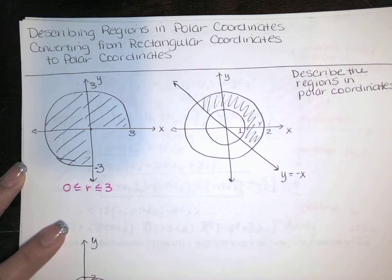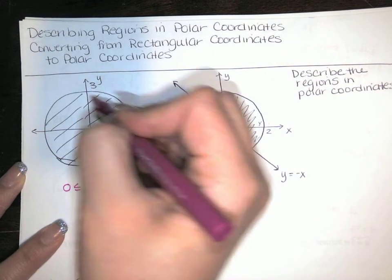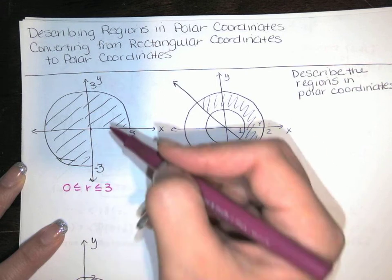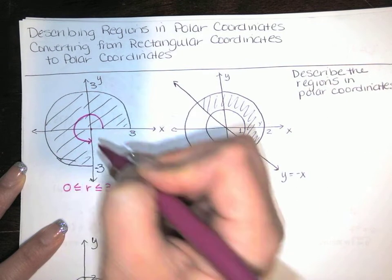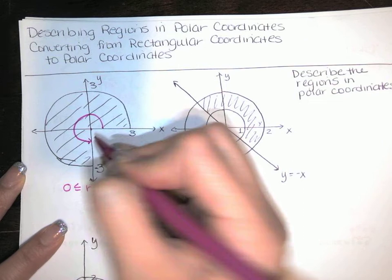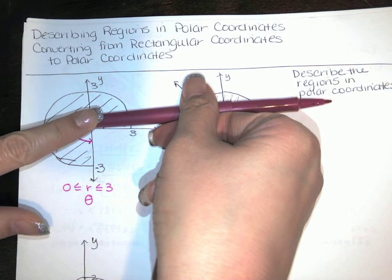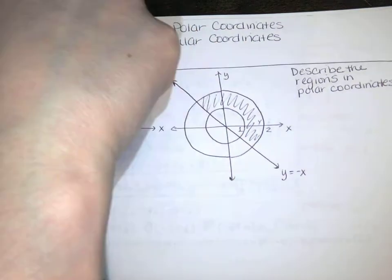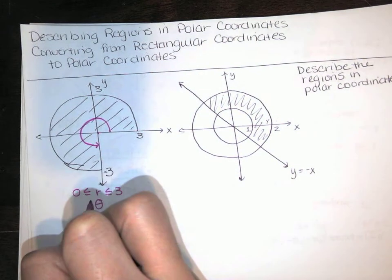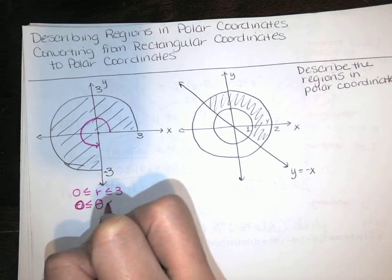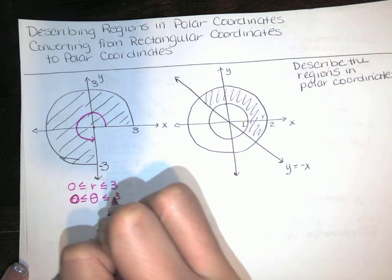If you're thinking we don't get the whole circle, you're absolutely right. Theta is going to take care of the fact that we don't get that whole disk. Theta starts here and ends here, telling us where to start and where to stop. Theta is an angle that sweeps around the xy plane, starting at 0 and sweeping counterclockwise, ending up at pi plus half a pi — that's 3π/2.